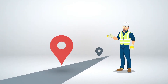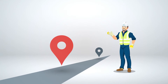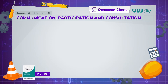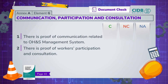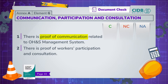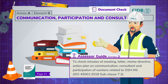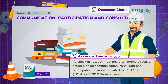We're about halfway done with document check. There are quite a number of elements more to cover, so sit up straight and here we go. Element G focuses on communication, participation and consultation. The employer needs to prove that matters relating to the OSH management system have been communicated to employees and that there is employee participation and consultation. Ask for minutes of meetings, letters, memo directives, or action plans on communication to support this assertion.